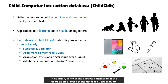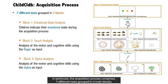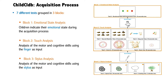Some of the aspects considered in the acquisition process of the dataset by children are interaction with screens using both finger and pen stylus, children's emotions and grades, among many others. In particular, the acquisition process comprises seven different tests grouped in three main blocks.